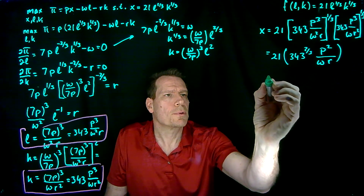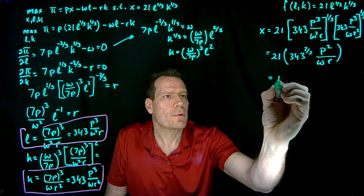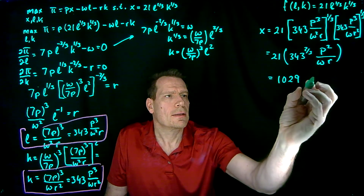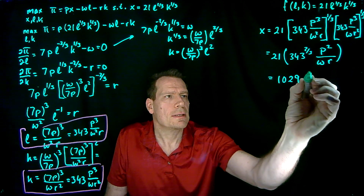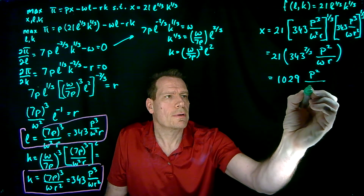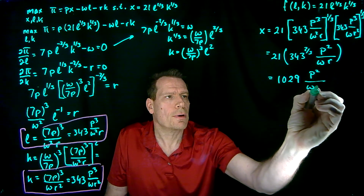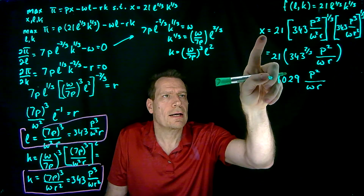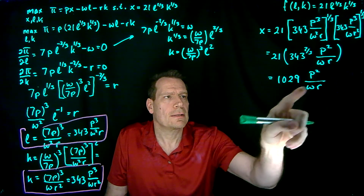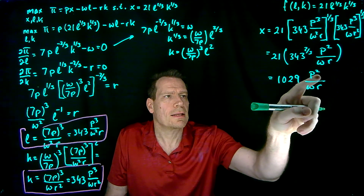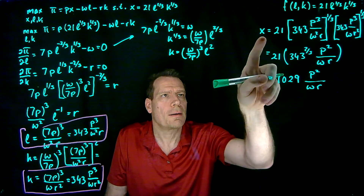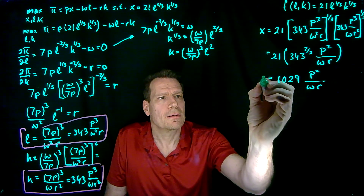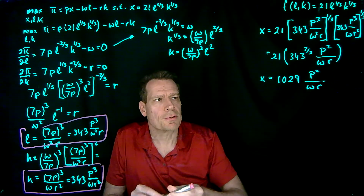Multiplying that out, we get 1029 times P squared over WR. So that tells us for any input prices and output price how much we're going to supply — that becomes our supply function.